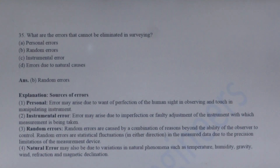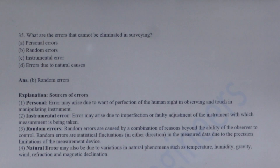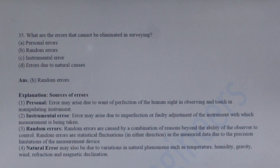Next question: What are the errors that cannot be eliminated in surveying? Random errors, also known as accidental errors, occur randomly and are caused by the combination of reasons beyond the ability of the observer to control. Random errors follow the law of probability and therefore cannot be eliminated in surveying.